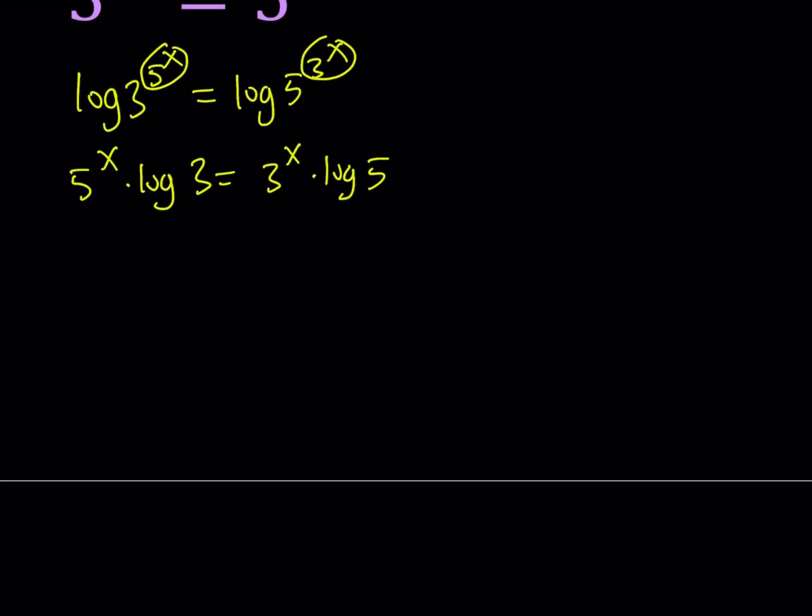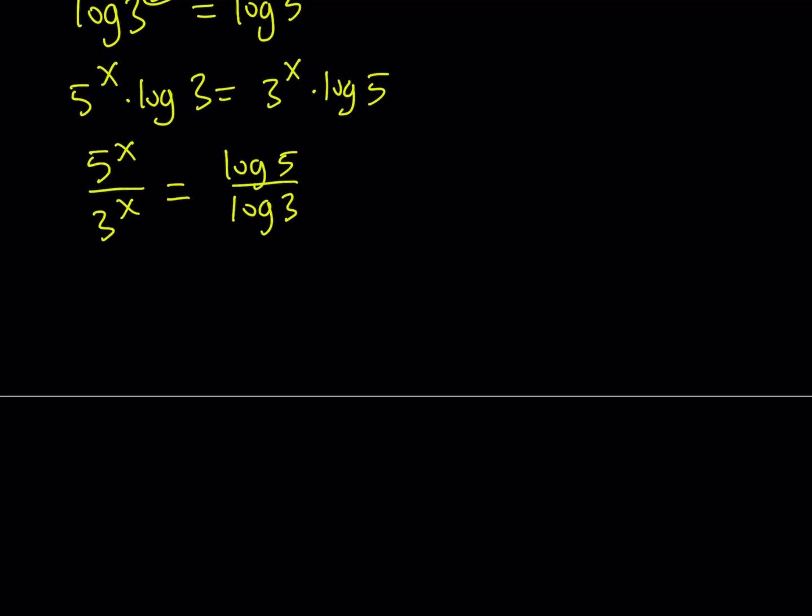Now, we can go ahead and put the two expressions that have the x as an exponent together. So, divide both sides by 3 to the power x and then divide by log 3. Now, since they both have the same exponent, we can write it as 5 over 3 to the power x.